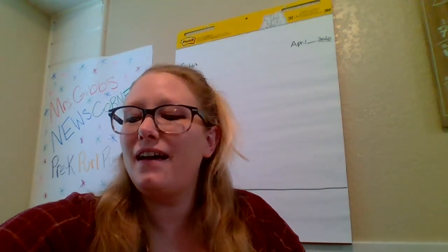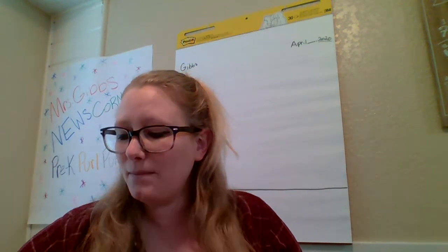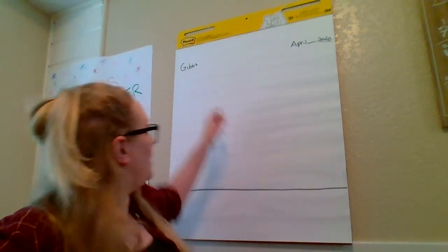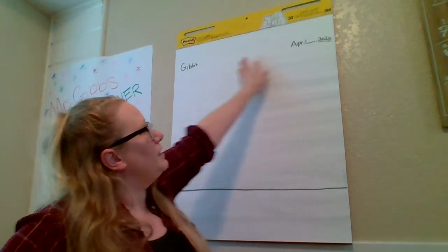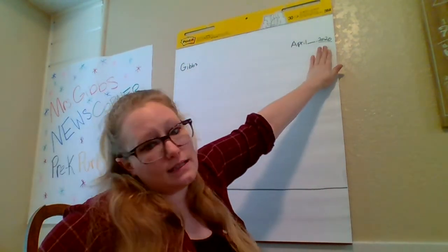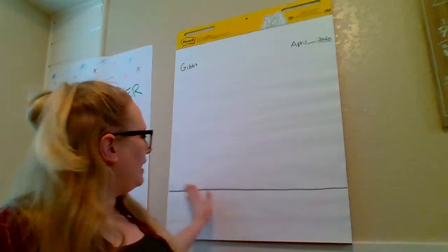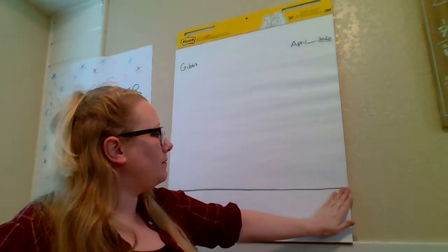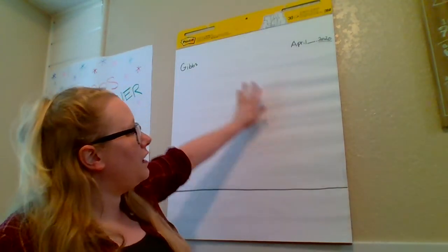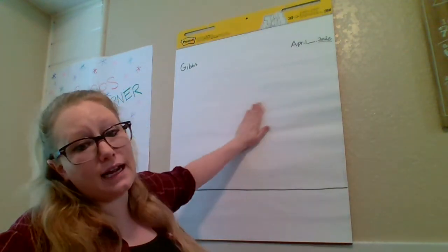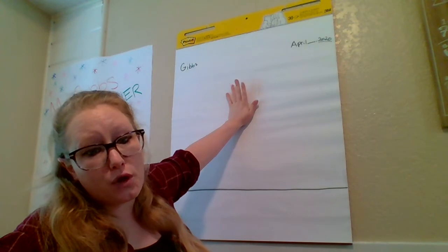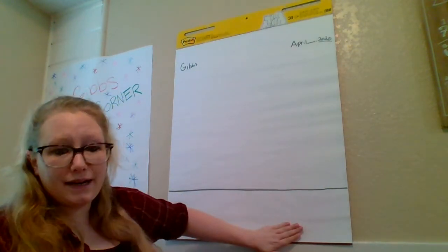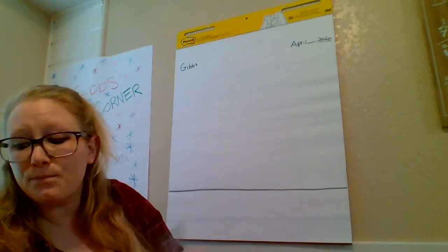I already went ahead and wrote my name, the date, and I drew a line towards the bottom. So above our line, we draw our picture. Below our line, we write our words.